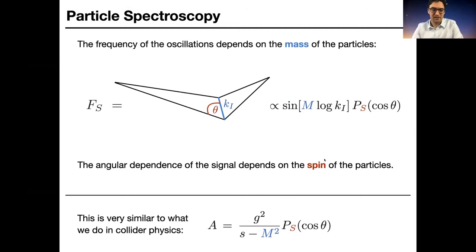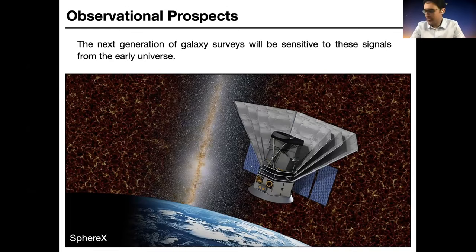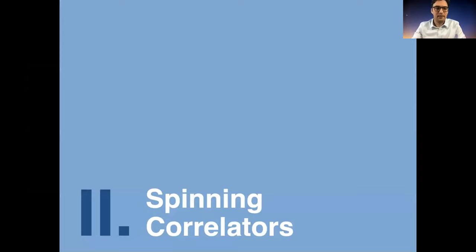Although we describe these fluctuations at very early times, we think they will get imprinted in the late universe. Experimental efforts like the SPHEREx experiment will search for these signals in the future.